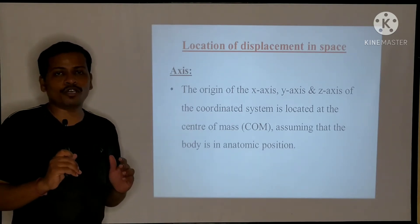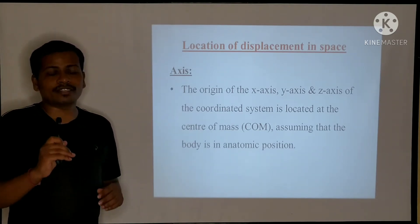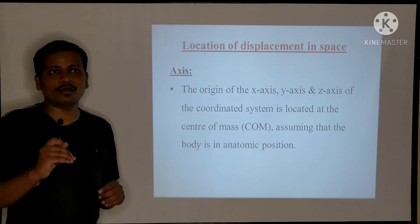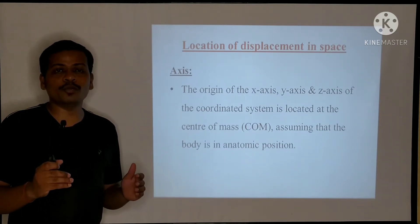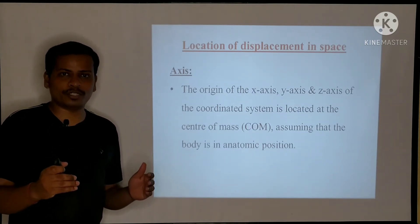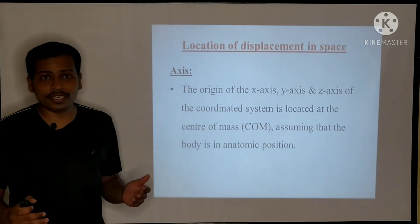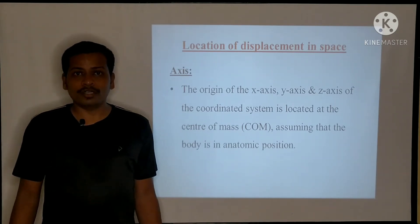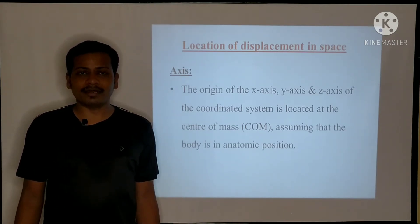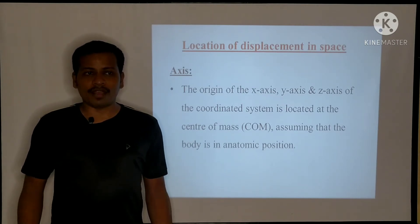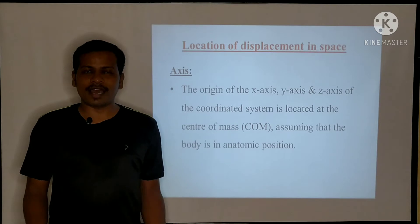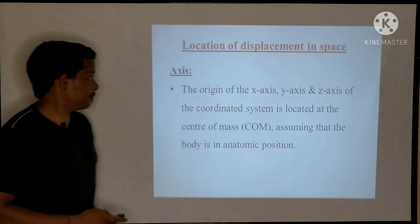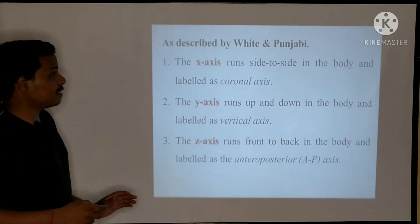Where does the center of mass locate in a human body? The center of mass in a human body is located approximately anterior to the second sacral vertebra, assuming the human body is in anatomic position. The anatomic position is when the human being is standing erect with feet together, facing forward, and with the palms facing forward.